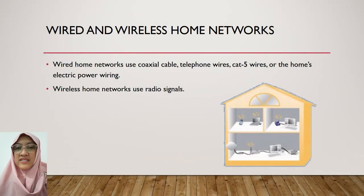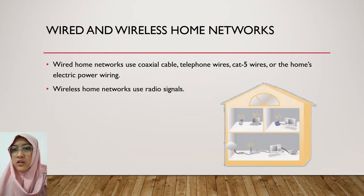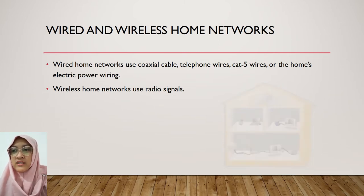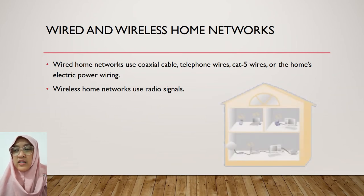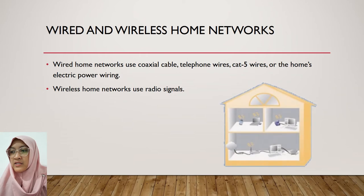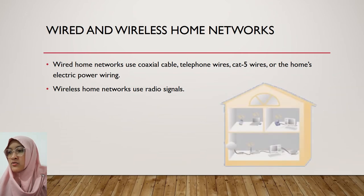That covers all the wireless transmission media. Now we discuss wired and wireless home networks. Wired home networks use coaxial cable, telephone wire, CAT5 wires, or the home's electric power wiring. Wireless home networks use radio signals. We can conclude that wired home networks use wire to transmit signals, and wireless home networks use radio signals. Looking at the pictures in the presentation, the first picture is the wireless home network and the second is the wired home network — you can see the difference, with cables present in the wired network and absent in the wireless network.